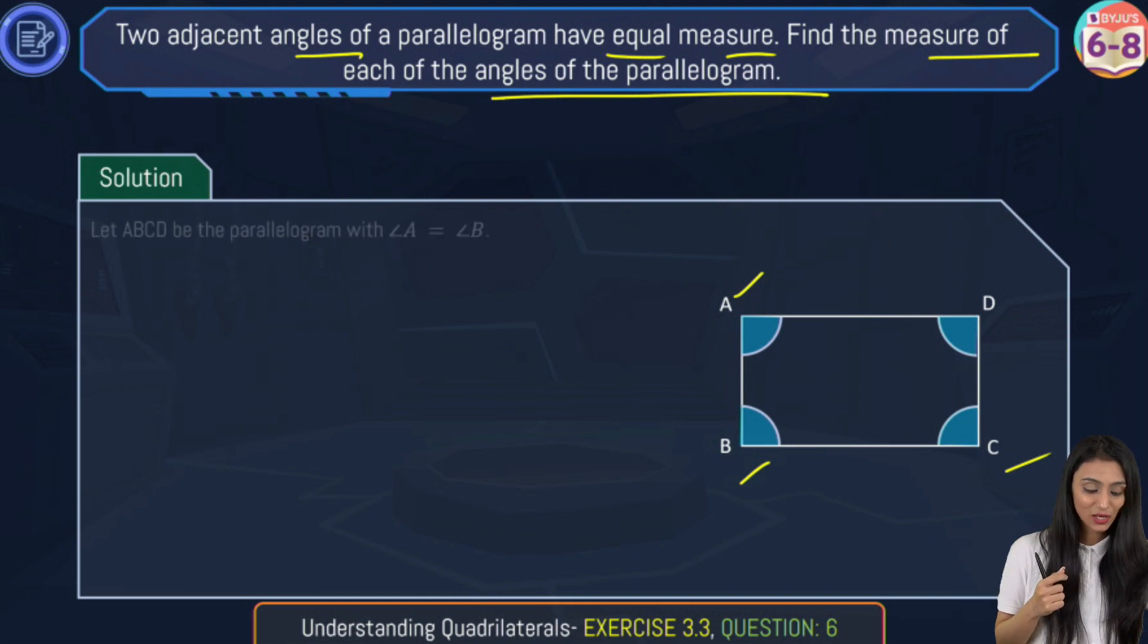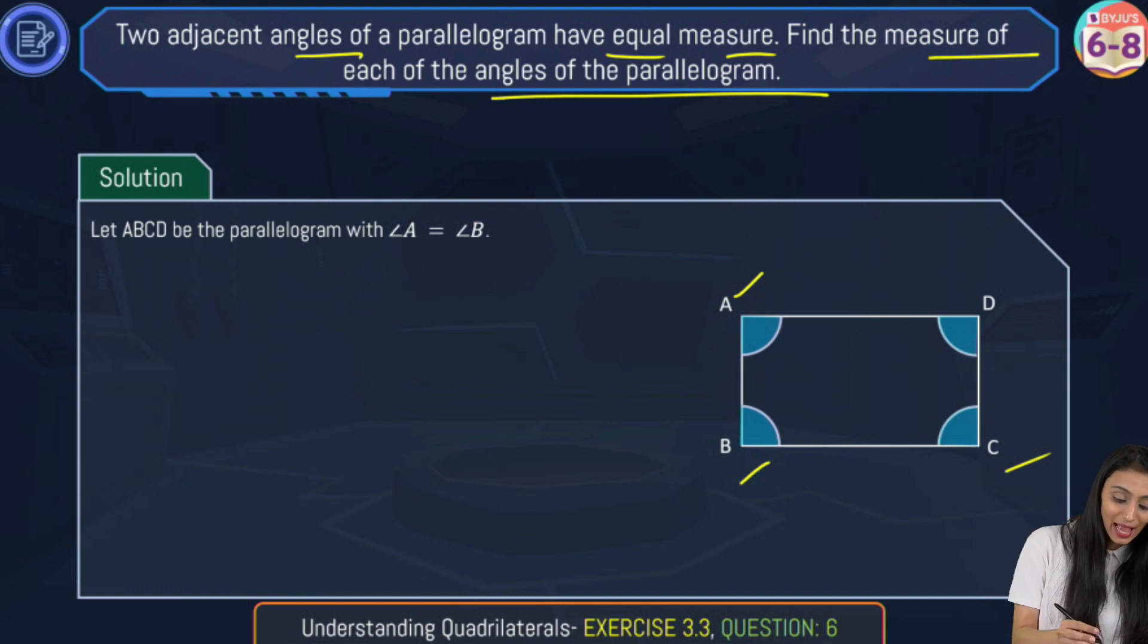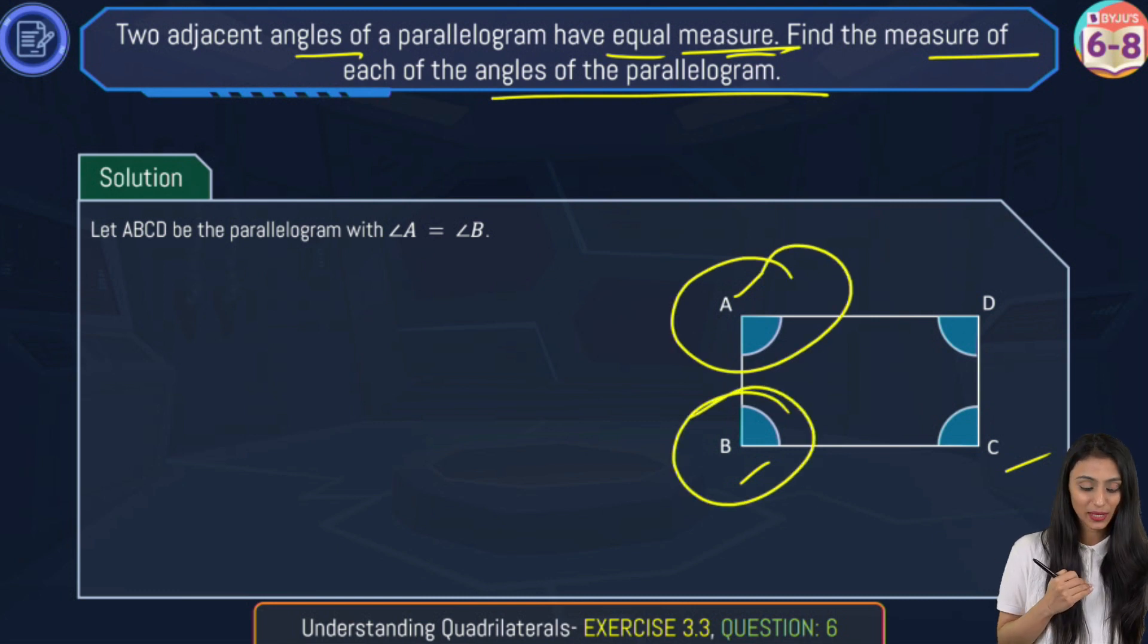Now we know one thing since it's a parallelogram, right? So obviously opposite angles of a parallelogram are equal, and here it says that adjacent angles have equal measure. This angle A and angle B, let's say these two are equal.